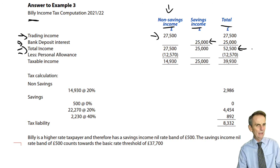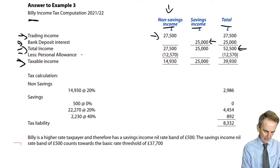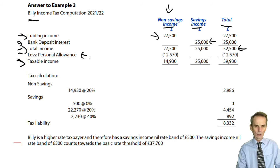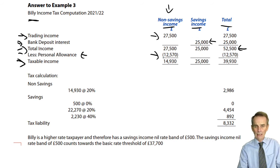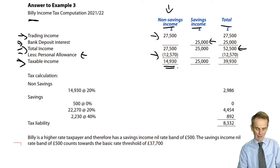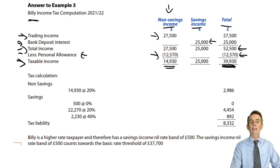At this point, we do not yet know whether Billy has become a higher rate taxpayer. We only know that when we've established the taxable income, and that demands the deduction of the personal allowance. We deduct that personal allowance first against non-savings income - the trading income of £27,500 - giving us £14,930. Taking it away from our total gives us £39,930.